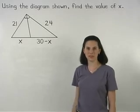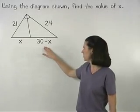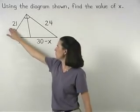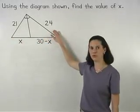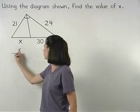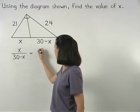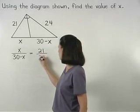So we can set up the proportion: x is to 30 minus x as 21 is to 24. We write x over 30 minus x equals 21 over 24.